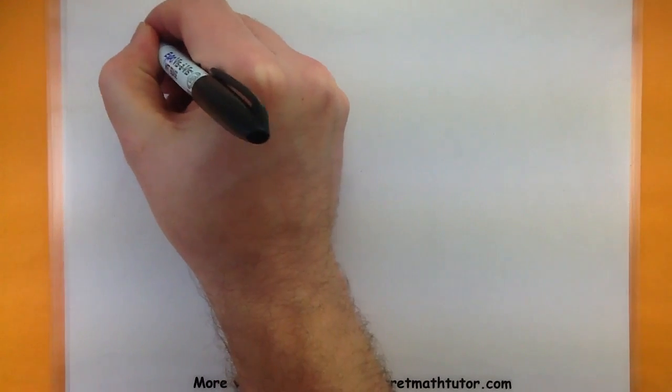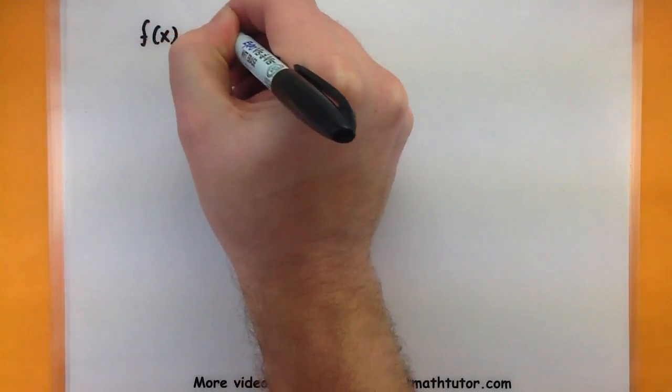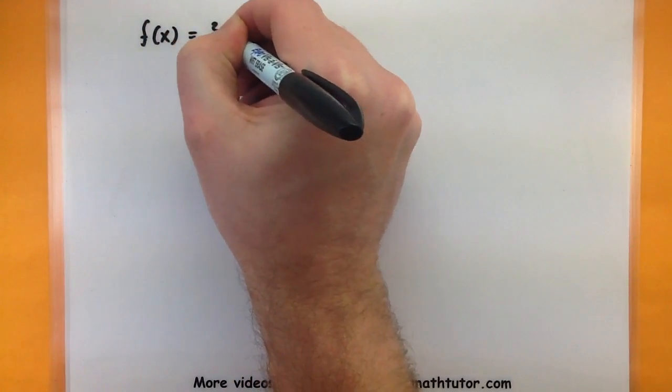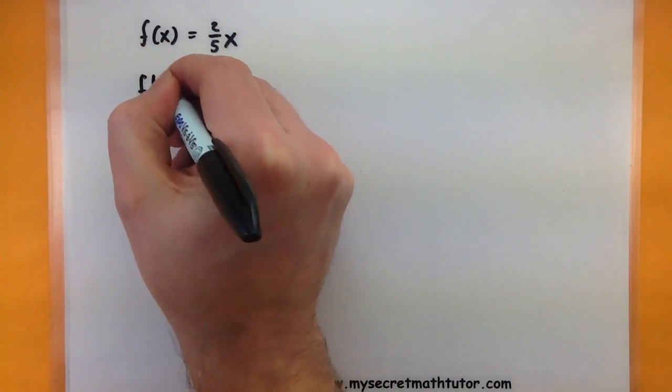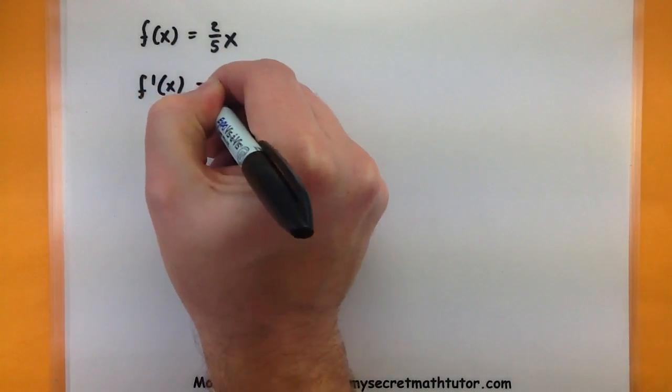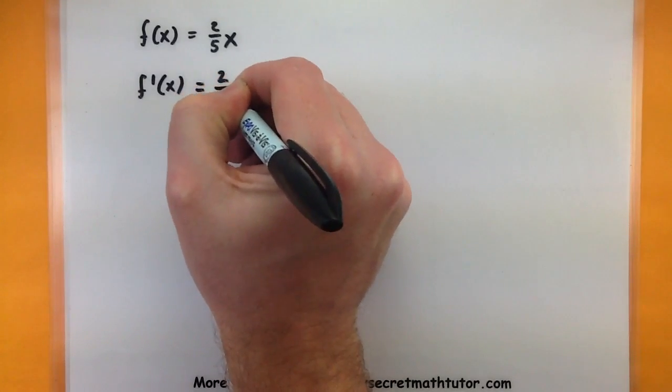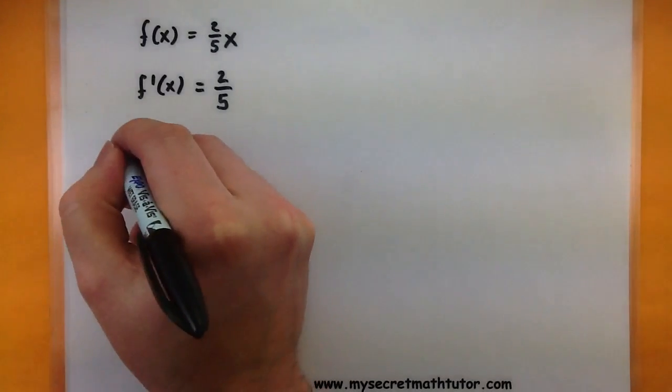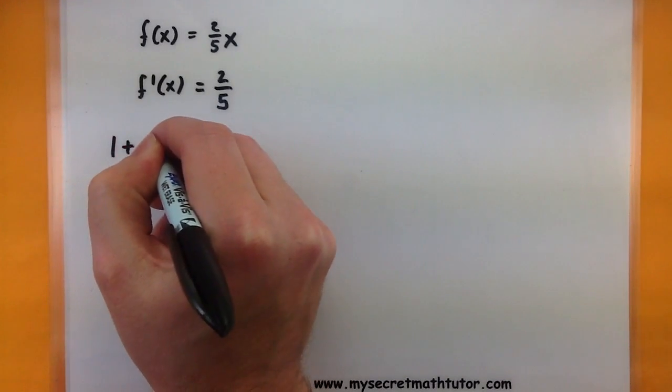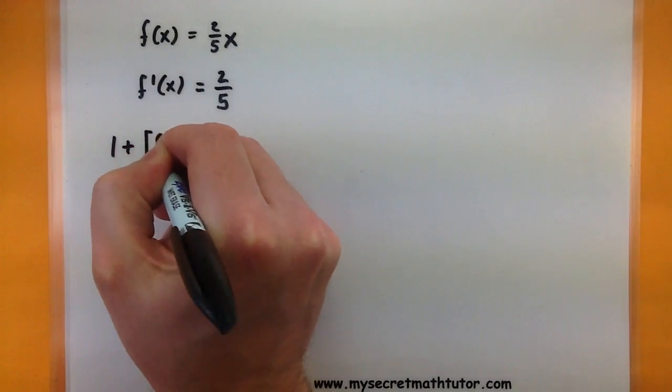So our function is simply two-fifths x. The derivative of this function then is pretty nice, two-fifths. Now, we're going to have to square that and put it underneath our square root, so let's work on simplifying that as much as possible right now.